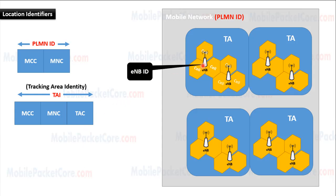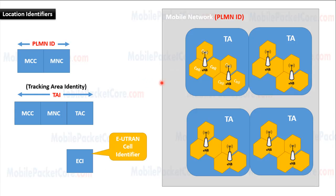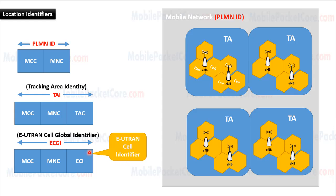Every eNodeB is identified by a unique ID, which is the eNodeB ID. Every cell is identified inside the PLMN by a cell identifier, ECI, which refers to EUTRAN Cell Identifier. And to identify the cell globally, we use ECGI, the EUTRAN Cell Global Identifier. The ECGI consists of the MCC and the MNC, in addition to the ECI.